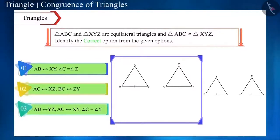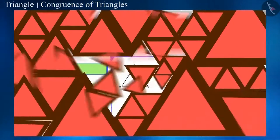And, in such circumstances, we can also write the congruence of triangles as follows. Triangle ACB is congruent to triangle XYZ, triangle CAB is congruent to triangle ZXY and triangle BAC is congruent to triangle YXZ. Let's look at one more question.